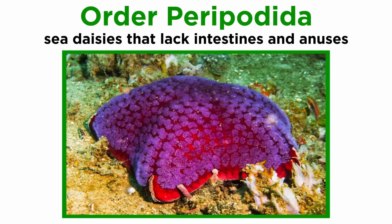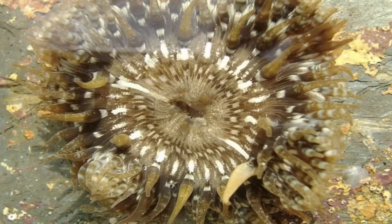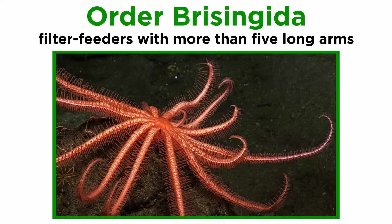Meanwhile, there are only three described species in order Peripodida, all of which are known as sea daisies that lack intestines and anuses. Less than one centimeter in diameter, they are disc-shaped animals with pentaradial symmetry and no arms. They are all found in the deep sea.